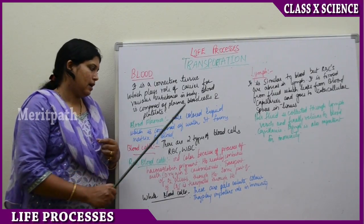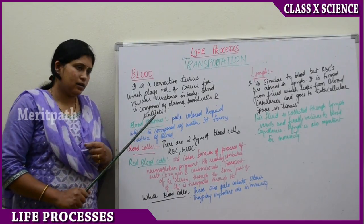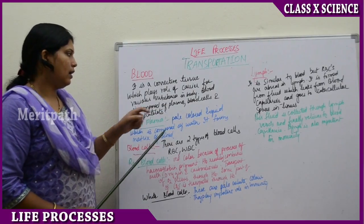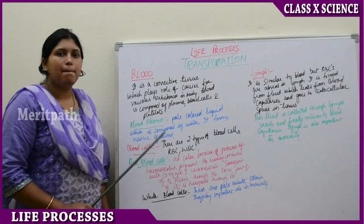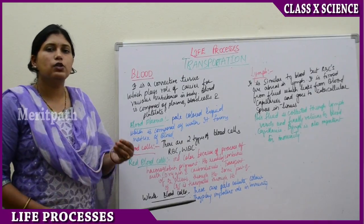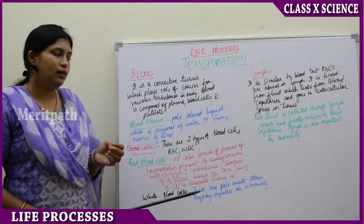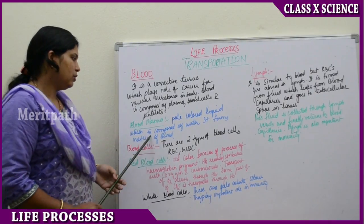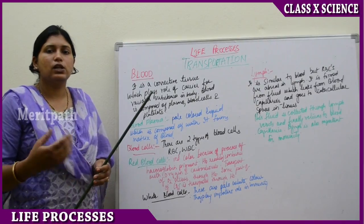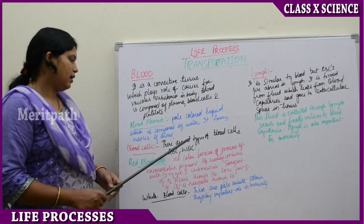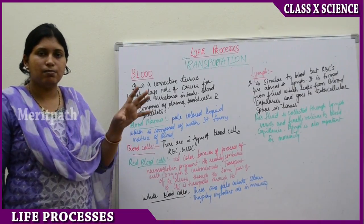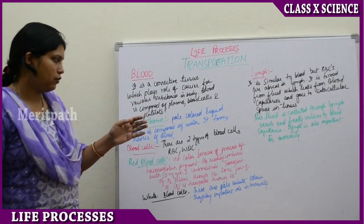Blood plasma is a pale, whitish-colored liquid mostly composed of water, and it forms the matrix part of blood as a connective tissue.